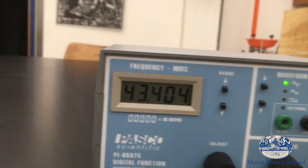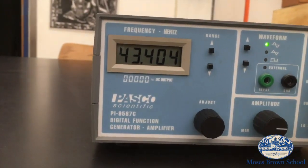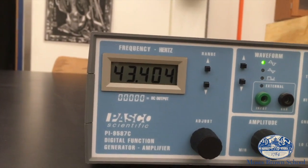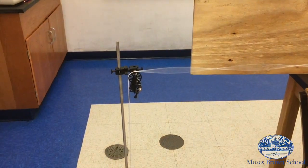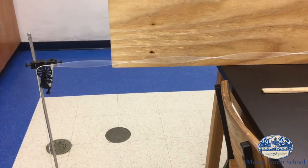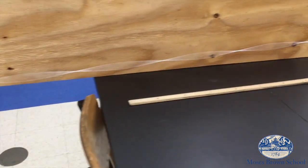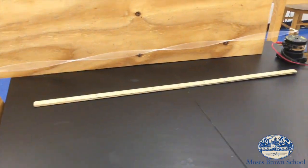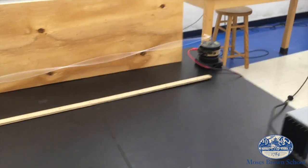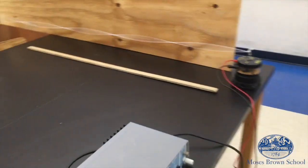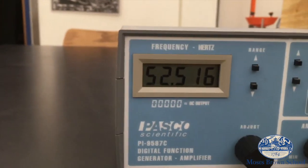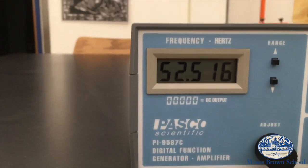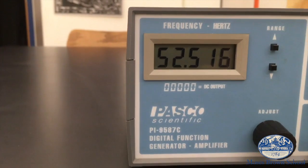So here's the pattern: 1, 2, 3, 4, 5, 6 anti-nodes and the new frequency is 52.5 Hertz. So how close were we with our prediction? And that's our experiment for today.